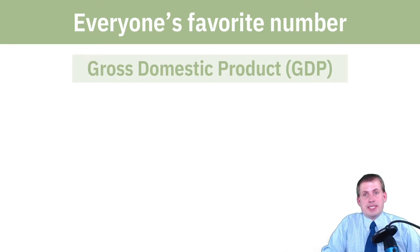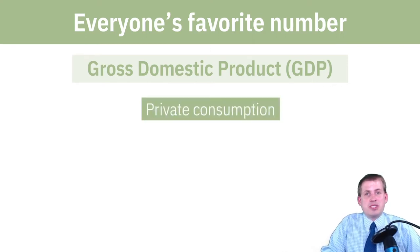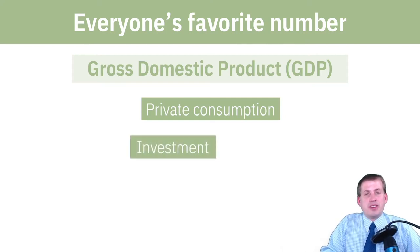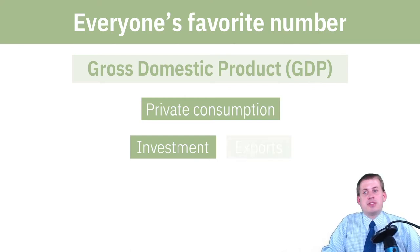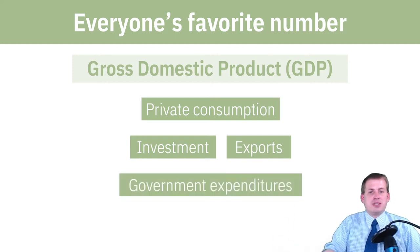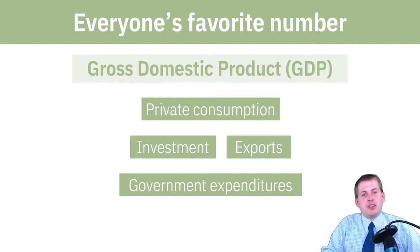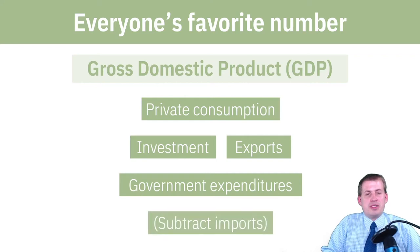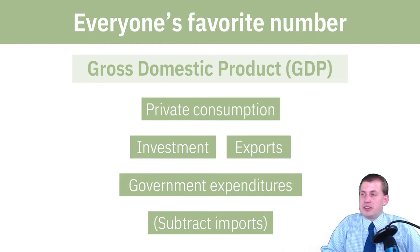GDP includes a few different values. Private consumption counts all the money people spend at stores, factories, and on services. Investments count how much money people put in banks and invest in companies. Exports count how much stuff leaves the country and at what prices. Government expenditures count things like when the government builds a new freeway. Add all of those up, then subtract whatever you're importing, and that is GDP.